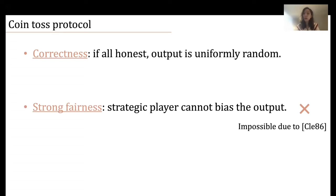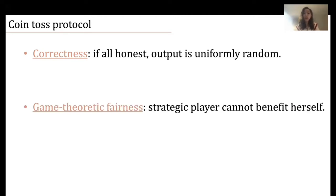Indeed, even in Blum's coin toss protocol we just saw, I can always bias the output towards one by refusing to open the commitment. The fairness notion achieved by Blum's coin toss protocol is actually more of a game theory flavor. For game theoretic fairness, it requires that a strategic player cannot benefit herself by deviating from the protocol. Now that we've seen Blum's coin toss protocol which achieves game theoretic fairness for two-party coin toss, a natural question to ask is: can we achieve game theoretic fairness for multi-party coin toss?